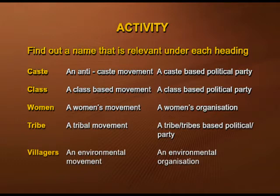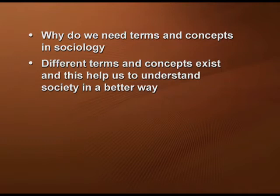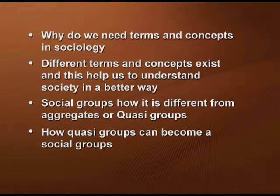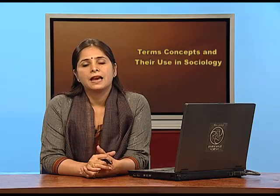Let's recap what we've learned. We discussed why we need terms and concepts in sociology, and how contrasting and divergent views help us understand society better. We discussed how social groups differ from aggregates and quasi-groups, how quasi-groups can become social groups, and the characteristics of social groups. In the next lecture, we'll discuss the different forms and types of groups that exist in society.